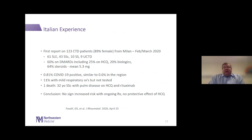From the beginning, we've wondered whether our patients on therapy are sicker. A report just out from Milan looked at 123 patients with connective tissue diseases — mostly lupus, some scleroderma, Sjogren's syndrome, and undifferentiated. Most were on DMARDs including hydroxychloroquine, 20% were on biologics, and a number were on steroids. They found the infection rate was not very different from their region during February and March. There was a single mortality — a woman with systemic sclerosis and pre-existing pulmonary disease on hydroxychloroquine and rituximab. Their overall conclusion was no sign of increased risk in patients on biologic or disease-modifying therapies, and no protective effect of hydroxychloroquine.